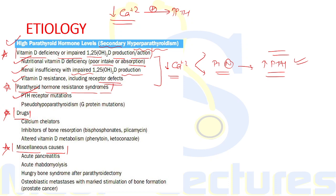PTH resistance can occur due to mutations in the PTH receptor or a condition known as pseudohypoparathyroidism, which is due to mutation in the G protein that mediates CASR signaling. Drugs like calcium chelators, inhibitors of bone resorption such as bisphosphonates and plicamycin, and drugs that cause altered vitamin D metabolism like phenytoin and ketoconazole — which inhibit the conversion of 25-hydroxyvitamin D to 1,25-dihydroxyvitamin D — can also lead to hypocalcemia and secondary hyperparathyroidism.